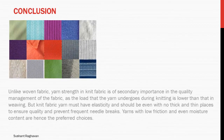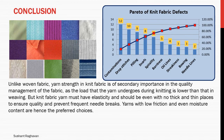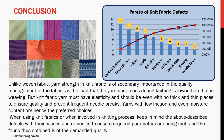Conclusion: unlike woven fabric, yarn strength in knit fabric is of secondary importance in quality management, as the load yarn undergoes during knitting is lower than in weaving. But knit fabric yarn must have elasticity and should be even, with more thick and thin places to ensure quality and prevent frequent needle breaks. Yarns with low friction and even moisture content are hence the preferred choices. Keep in mind the above-described defects with their causes and remedies to ensure required parameters are met and the fabric obtained is of the demanded quality.